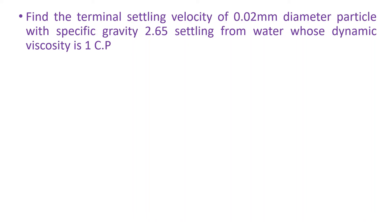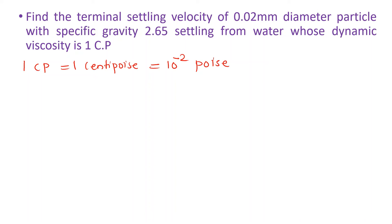This is a simple problem — direct substitution. The unit given is 1 centipoise. We need to convert 1 centipoise to SI units. 1 centipoise equals 10⁻² poise.